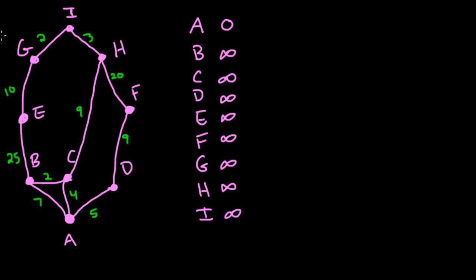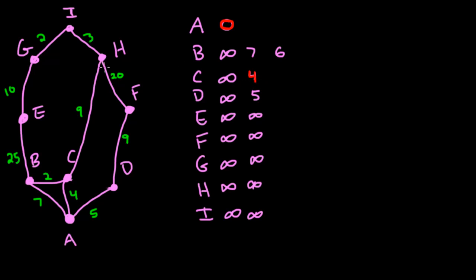Now I'll solve it. We start by putting the source into our solution with a label of 0. Looking at the neighbors: A to D is 5, so D gets label 5; A to C gives label 4; A to B gives label 7. The rest stay at infinity. We select C with the minimum label 4. C has two neighbors other than A: B and H. For B: minimum between 7 and (4+2)=6 — that's an improvement, so B gets 6. For H: 4+9=13, so H gets label 13. D stays at 5; E, F, G, I stay at infinity.